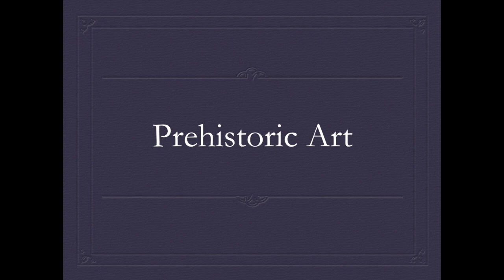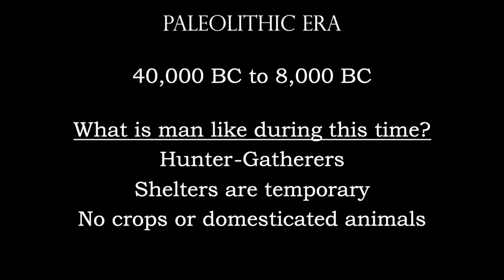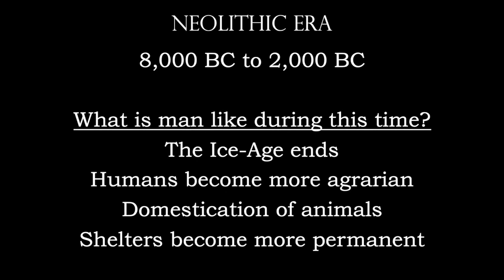We talked about prehistoric art, which had the Paleolithic and Neolithic eras. The Paleolithic ranges from 40,000 BC to 8,000 BC. During this time, man is a hunter-gatherer; shelters are temporary and there's no domestication of animals or crops. As the earth starts to warm, we enter the Neolithic from 8,000 down to 2,000 BC. We see the rise of major civilizations such as Egypt. We become more agrarian, live in small cities of 7,000 to 10,000 people, domesticate animals, and shelters become more permanent.